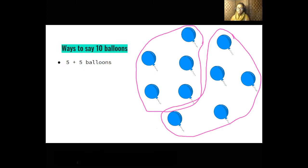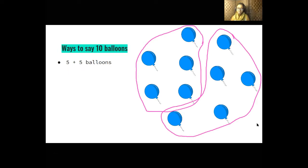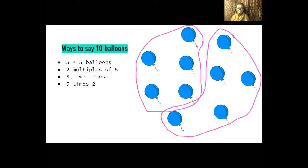We have a total of ten balloons. How can we say ten balloons in different ways based on the fact that we can group them in groups of five? We can say five plus five balloons — five balloons plus five more balloons. We can also say we have two multiples of five balloons: one group of five and another group of five, which is multiple groups of five. Multiple — that sounds like multiply. Five balloons two times, or five balloons times two. Five times two is actually the mathematical phrase we use when talking about multiplication.